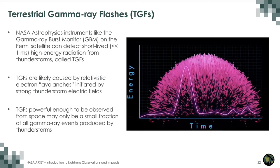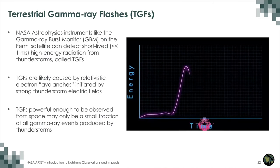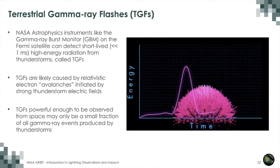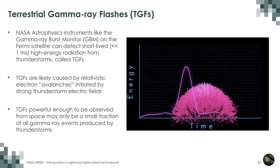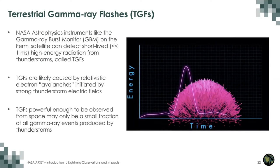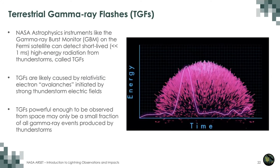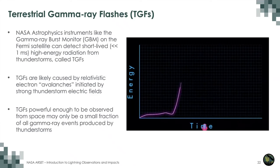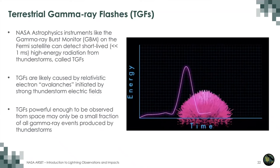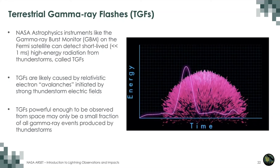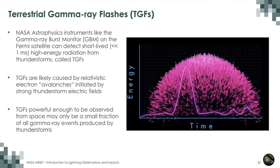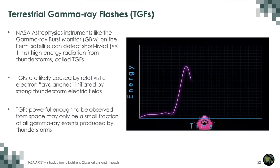One last note on spaceborne datasets: NASA astrophysics instruments have detected terrestrial gamma-ray flashes (TGFs) — high-energy, very short-lived radiation from thunderstorms. Discovered in the late 1980s or early 1990s, TGFs are probably caused by relativistic electron avalanches initiated by strong electric fields, and are powerful enough to be observed from space, though what we observe from space is likely only a small fraction of what thunderstorms actually emit. If interested in gamma-ray lightning-related data, you need to consult NASA astrophysics instruments.